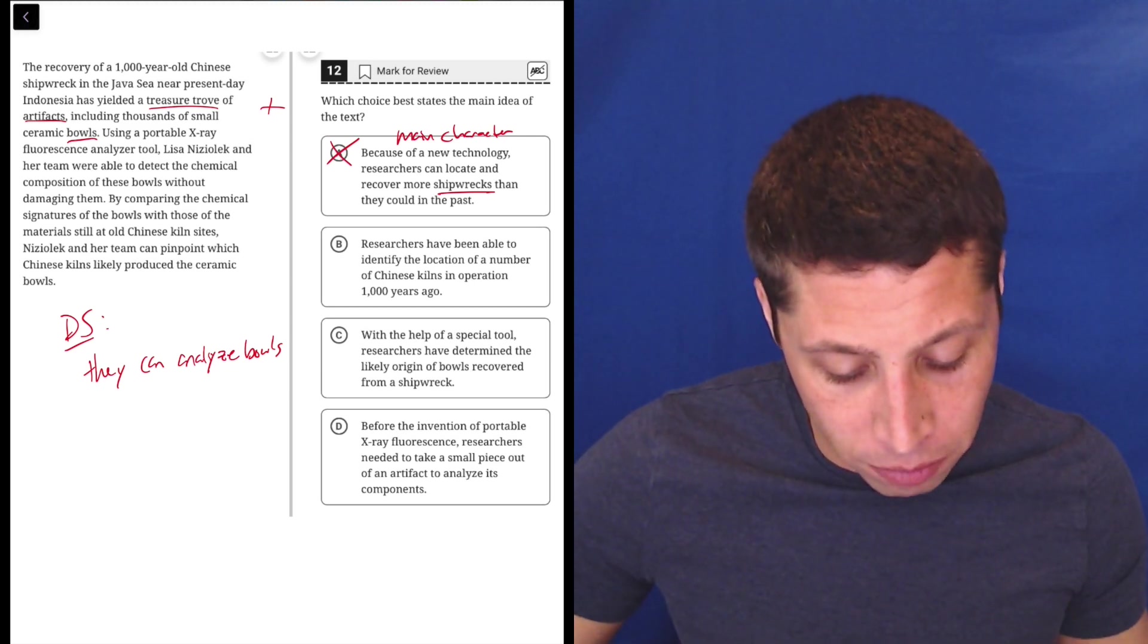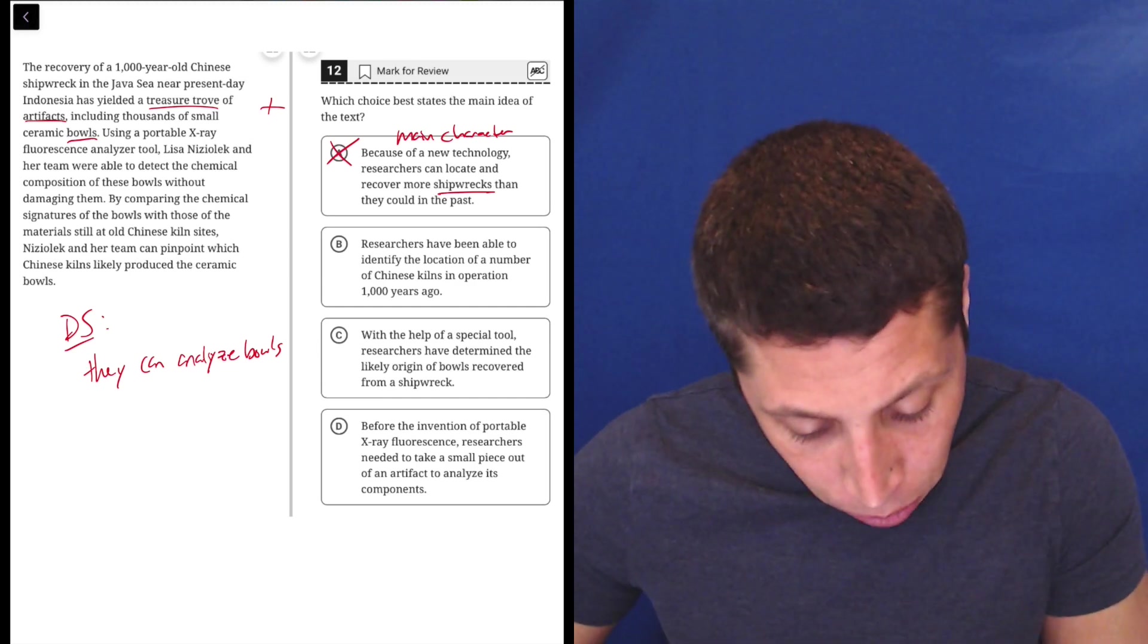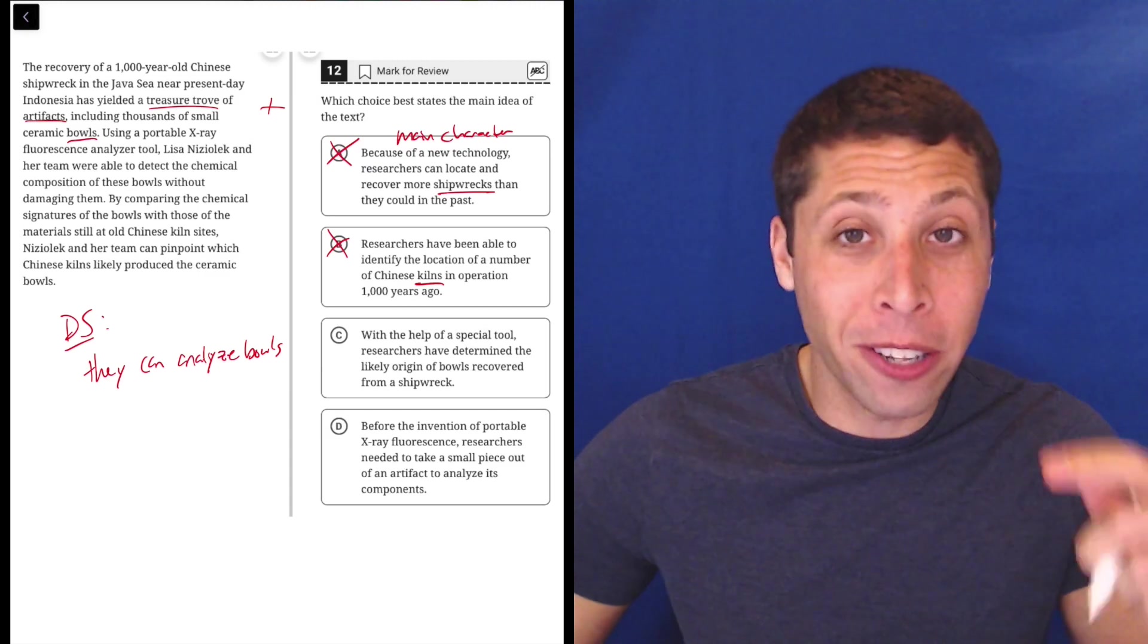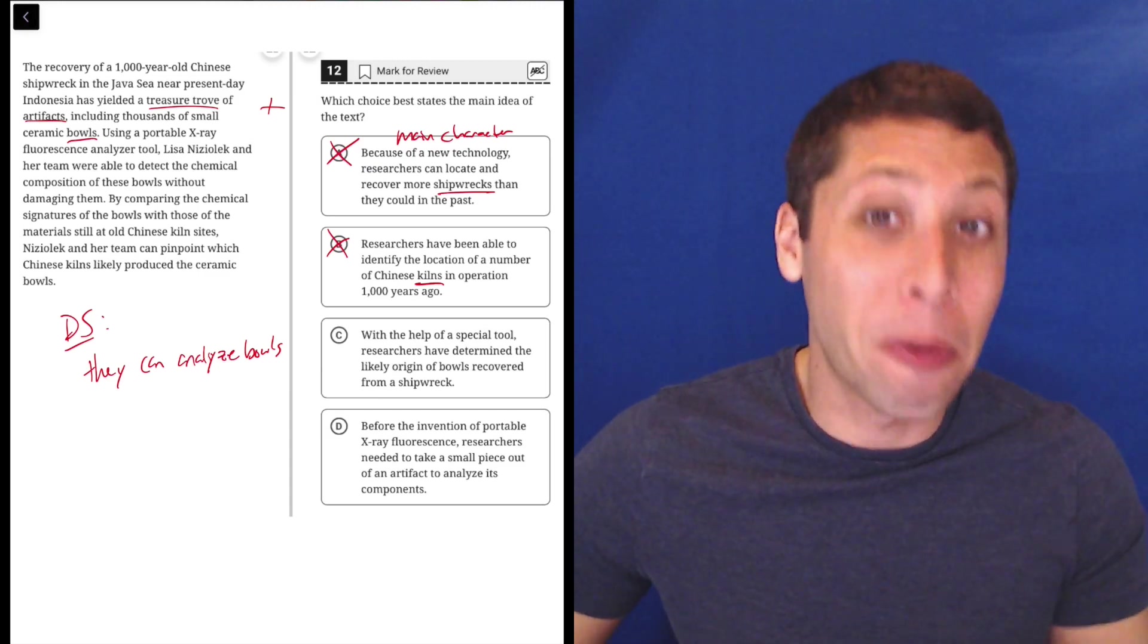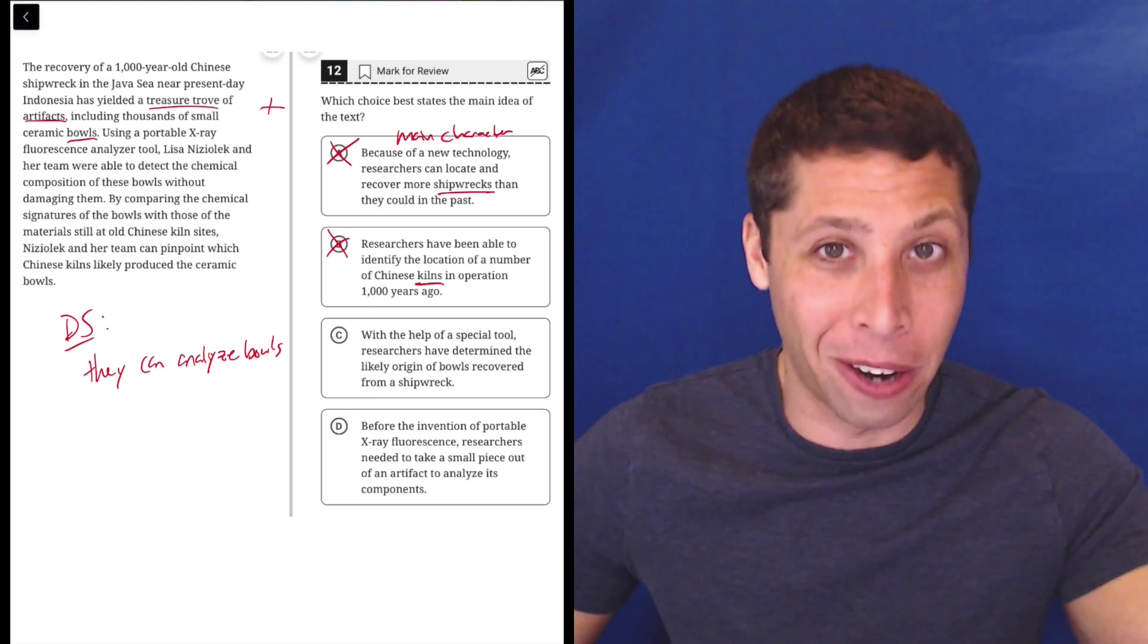B, researchers have been able to identify the location of a number of Chinese kilns in operation a thousand years ago. Again, main character's wrong. It's not about the kilns. It's about the bowls. If we wanted the location of something, it's the location of the bowls, where they were made, not where the kilns themselves are, but where the bowls are when they started.